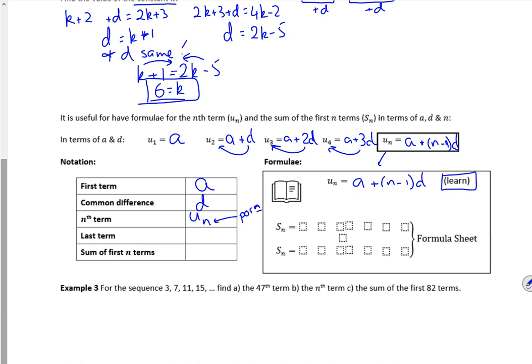So the first term we're going to call A. Common difference we call D. The nth term Uₙ with a subscript N. So U is the term. N is its position in the list. If N was 100, it's the 100th one we're going for. The last term we call L for last. And the sum, we do a big S, capital S, with a subscript N for the sum of. And once again, the n is the position in the list.